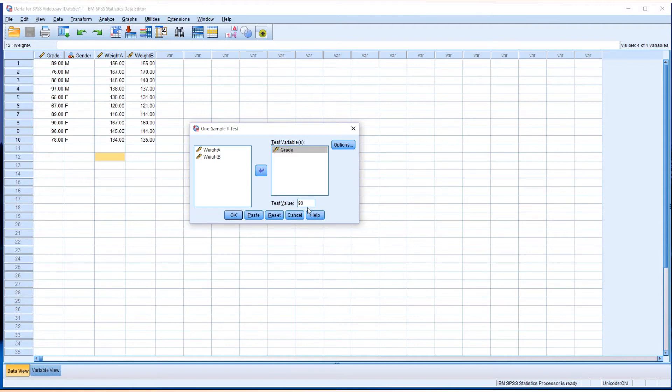Please do not forget to insert test value. Options. Since this is a 5% significance level, confidence interval should be 95%. So, keep as 95%. Continue. Click OK.